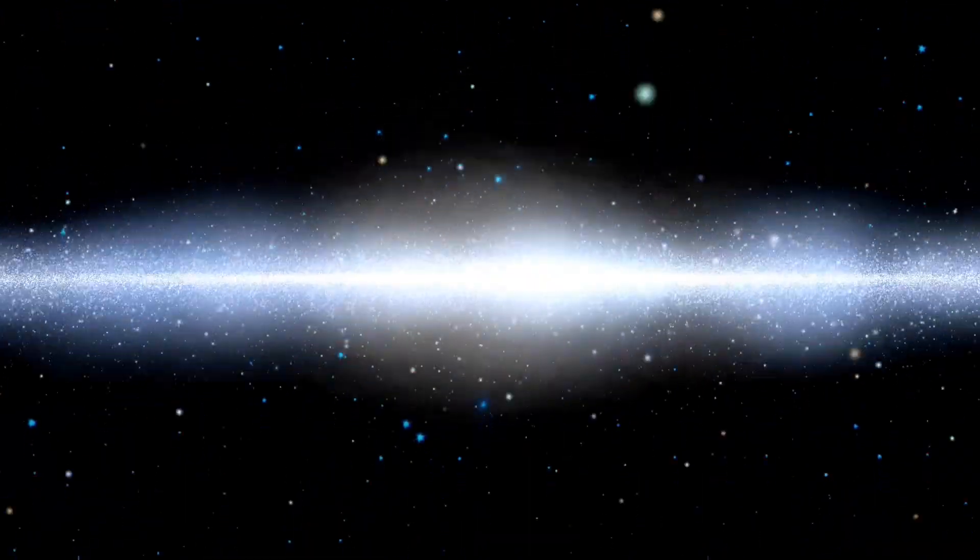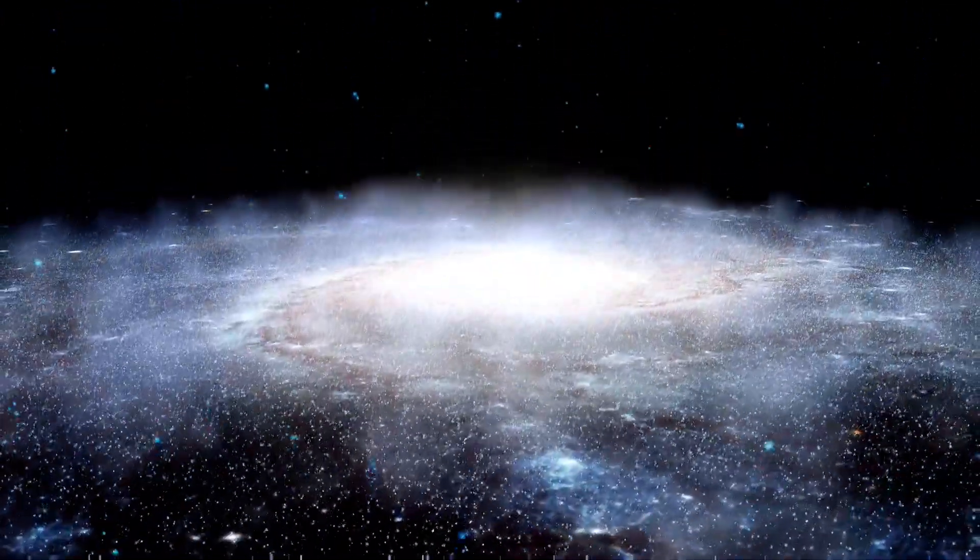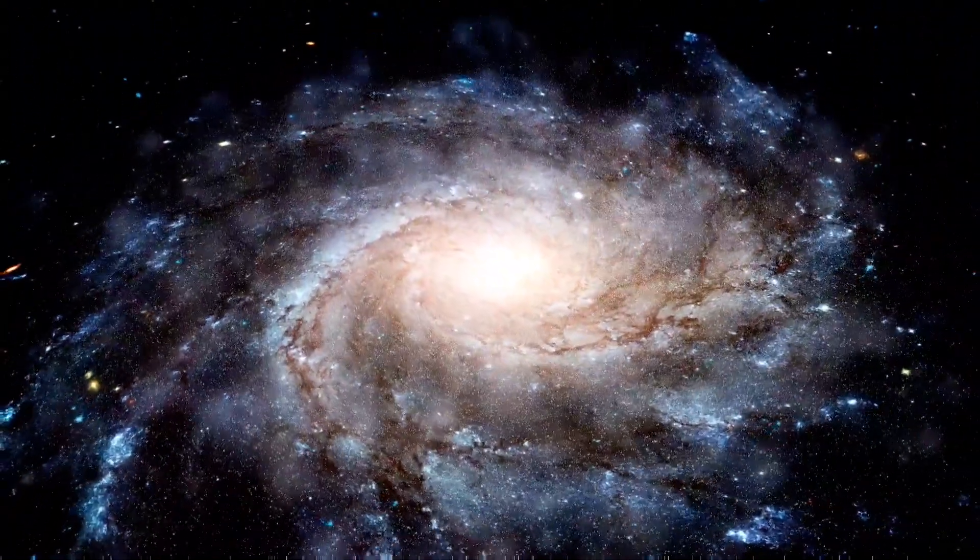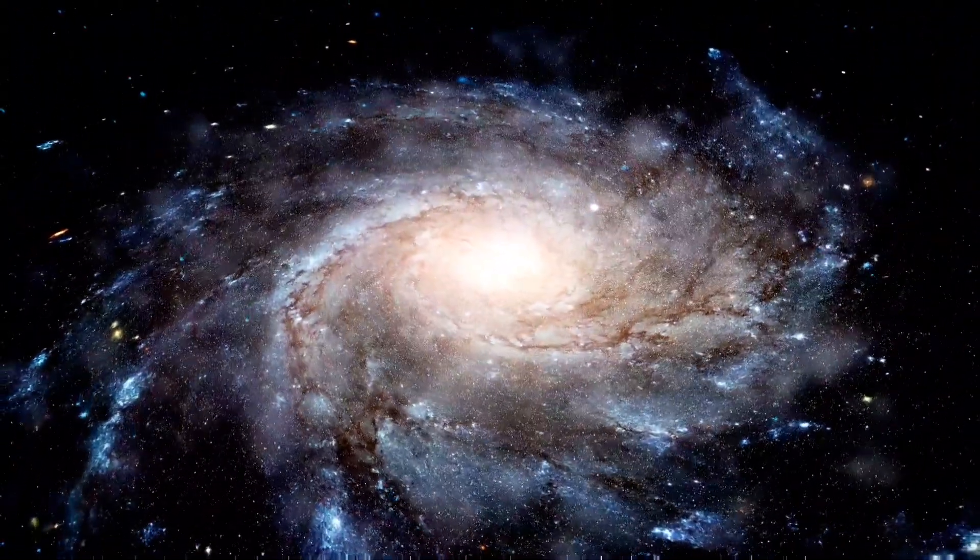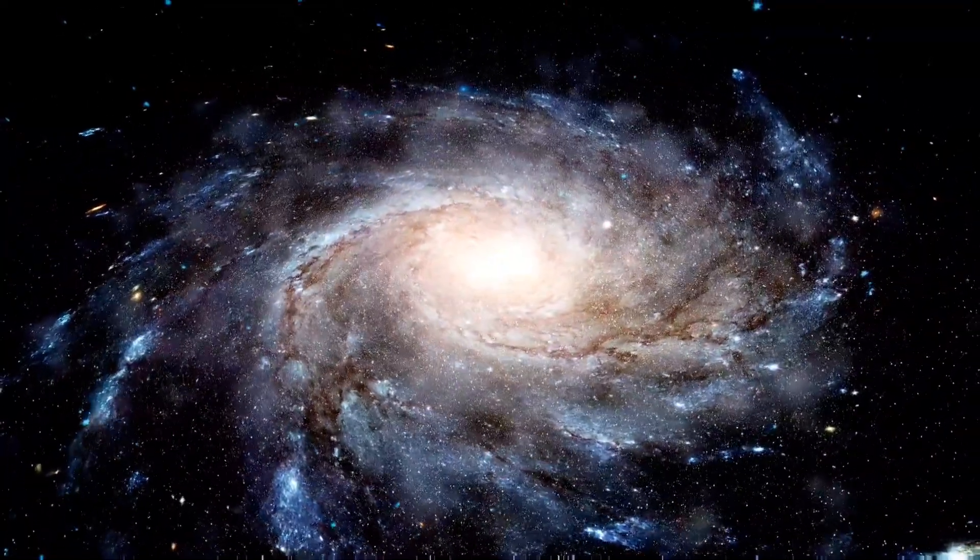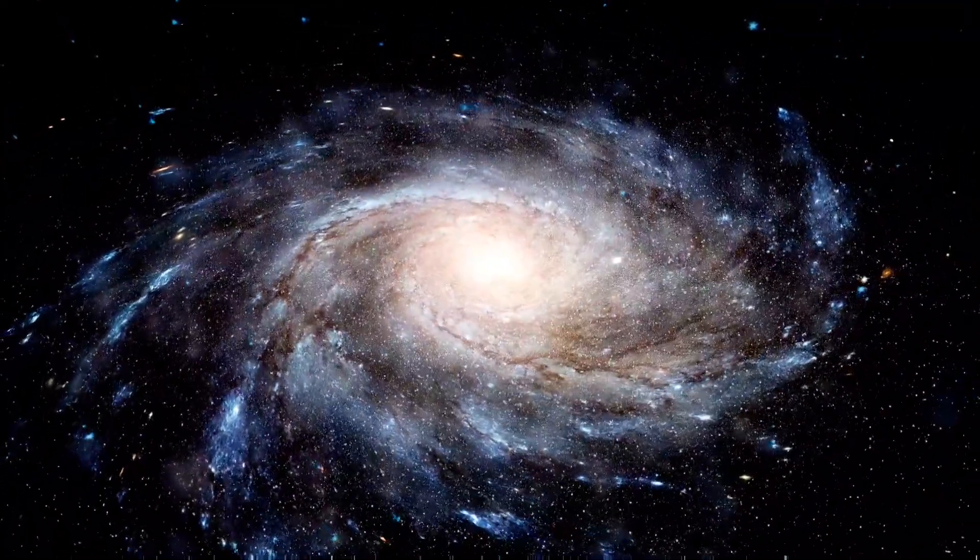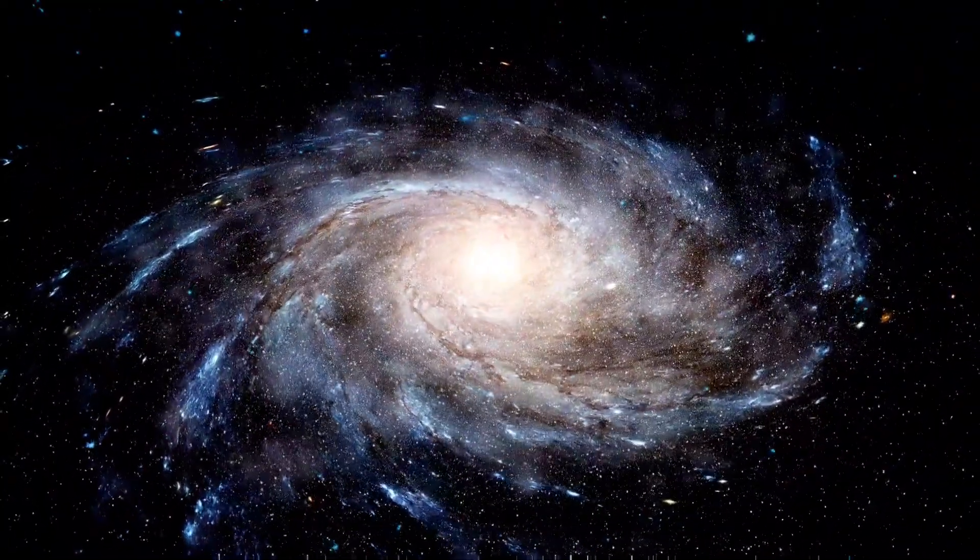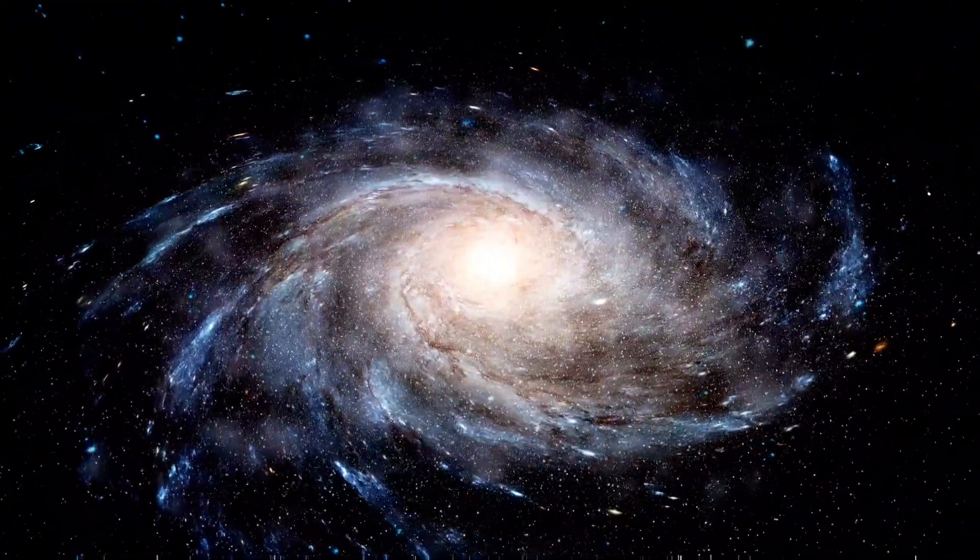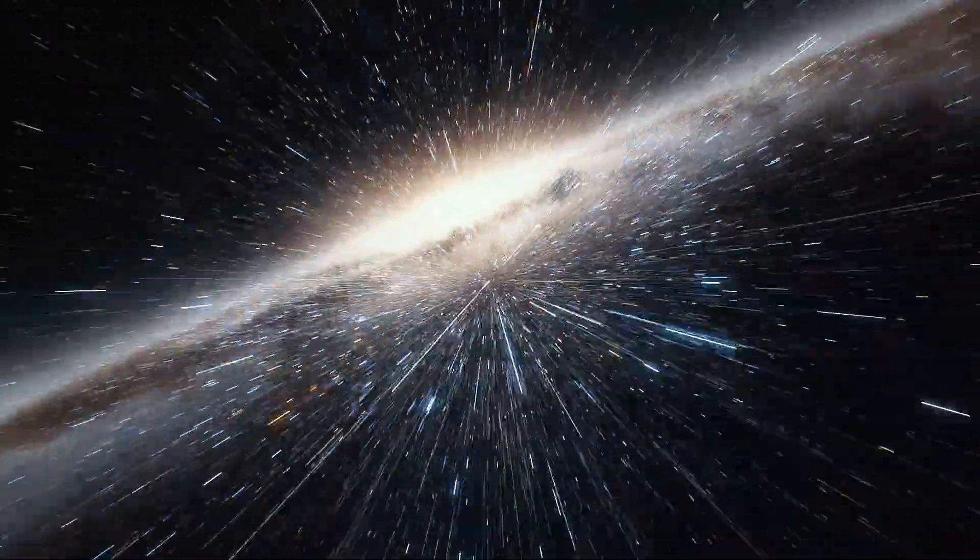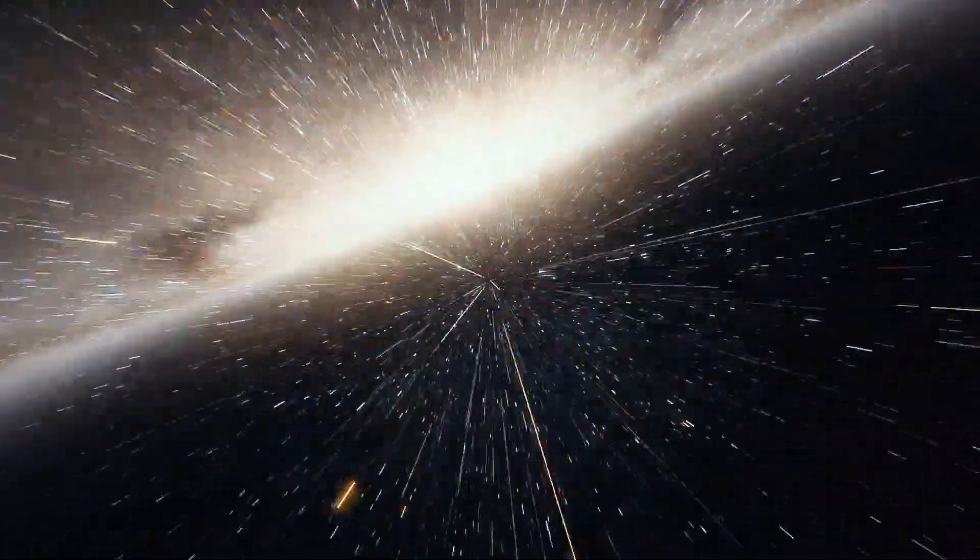As we continue our journey through the vast expanse of space, we arrive at an even more staggering cosmic structure, the Laniakea Supercluster. This immense congregation of galaxies, which includes the Virgo Supercluster and extends over 500 million light-years, is our galactic home on a grand scale. Laniakea, meaning immense heaven in Hawaiian, truly lives up to its name, containing the mass of 100 million billion suns.